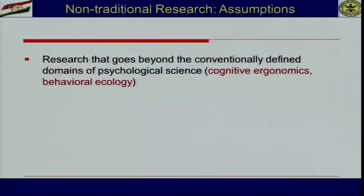There are certain assumptions in non-traditional research. The research goes beyond the conventionally defined domains of psychological science. Some of the areas include behavioral ecology — how ecological science and behavioral science come together. When we go beyond the domain of behavioral science and try to understand the relationship between behavior and a different science, it becomes part of non-traditional research.